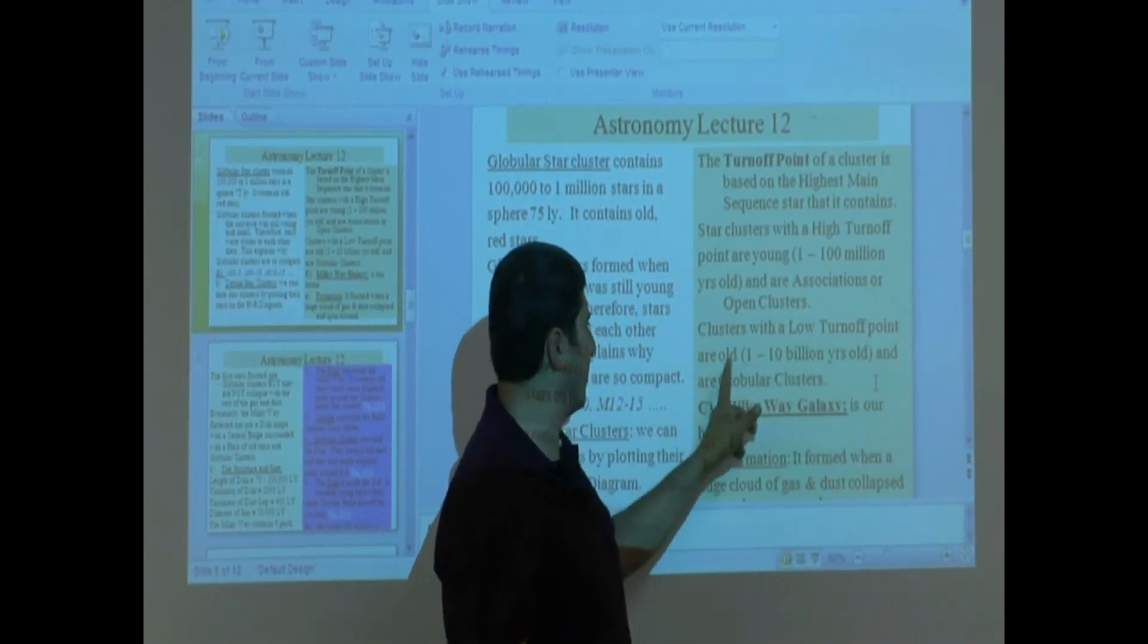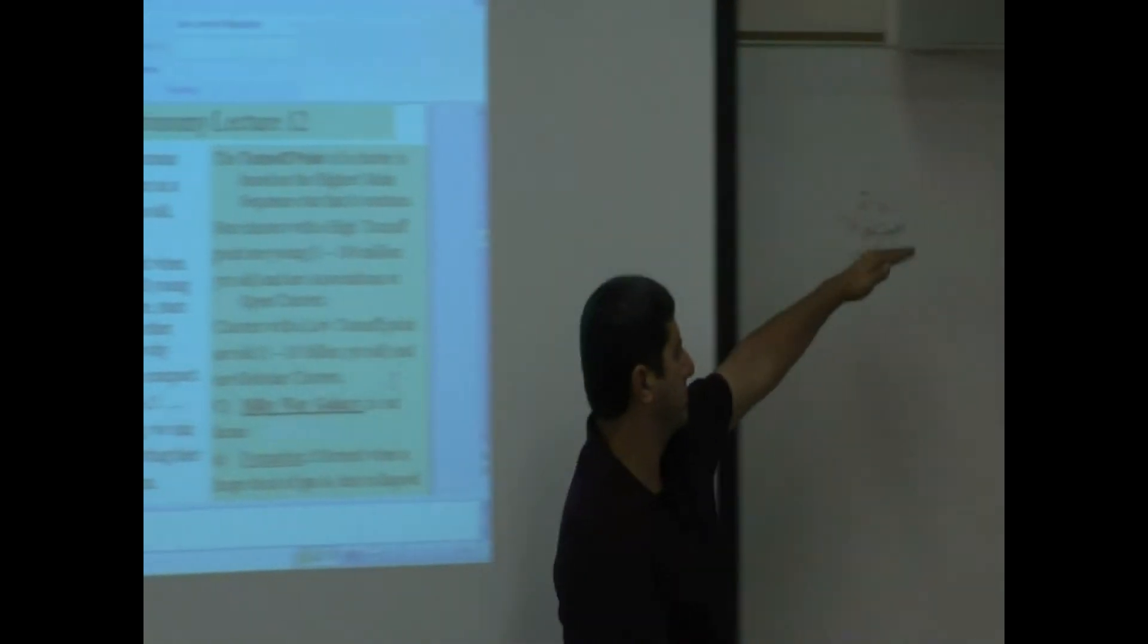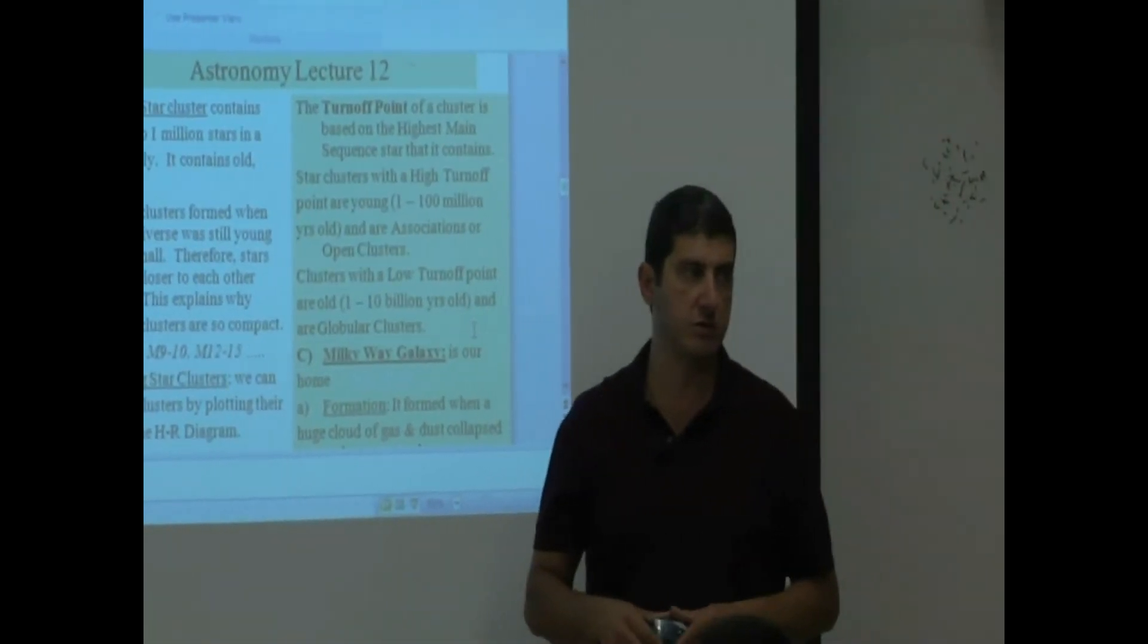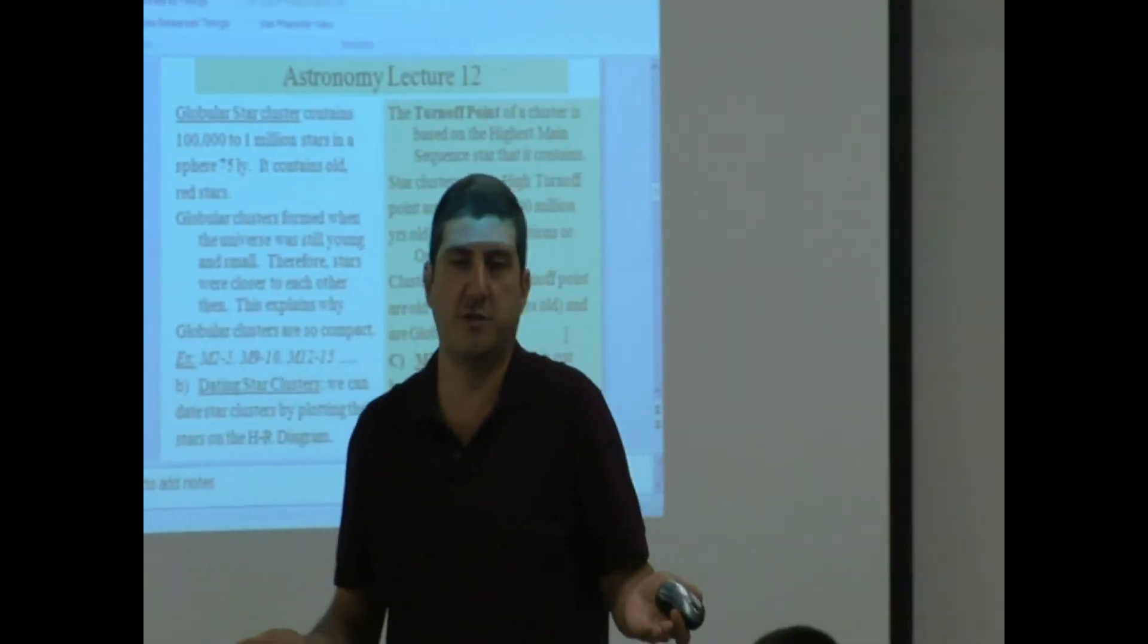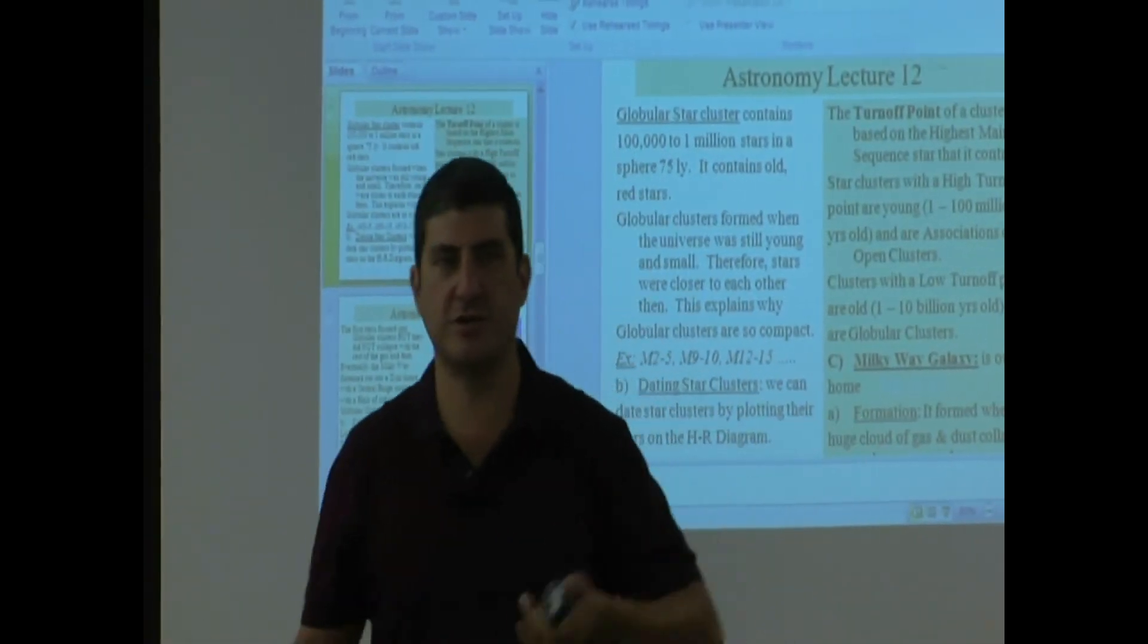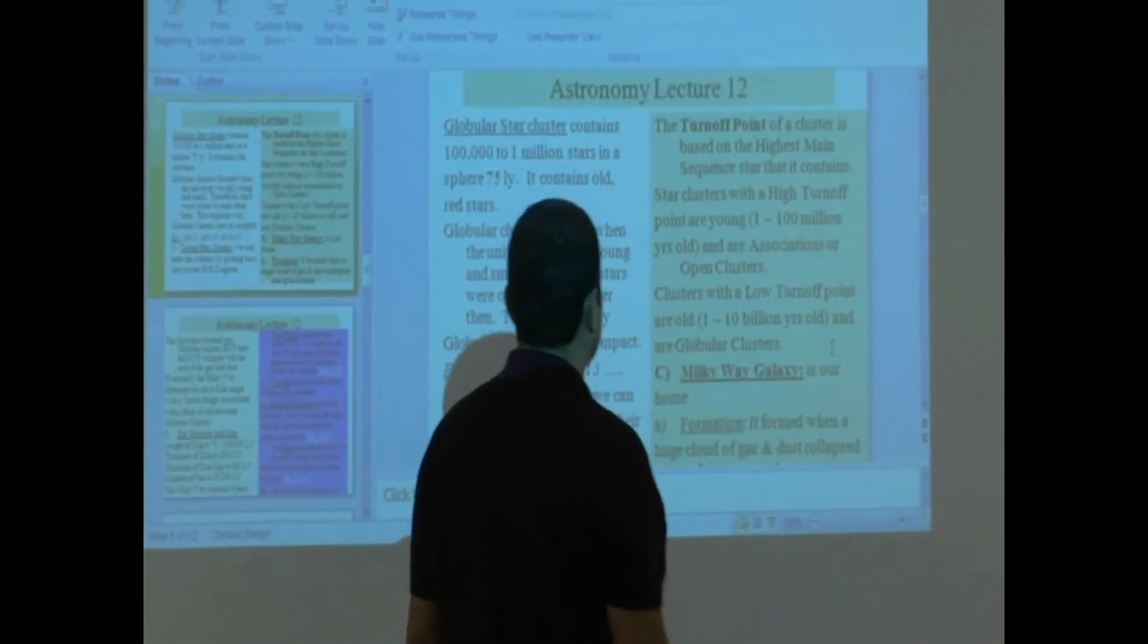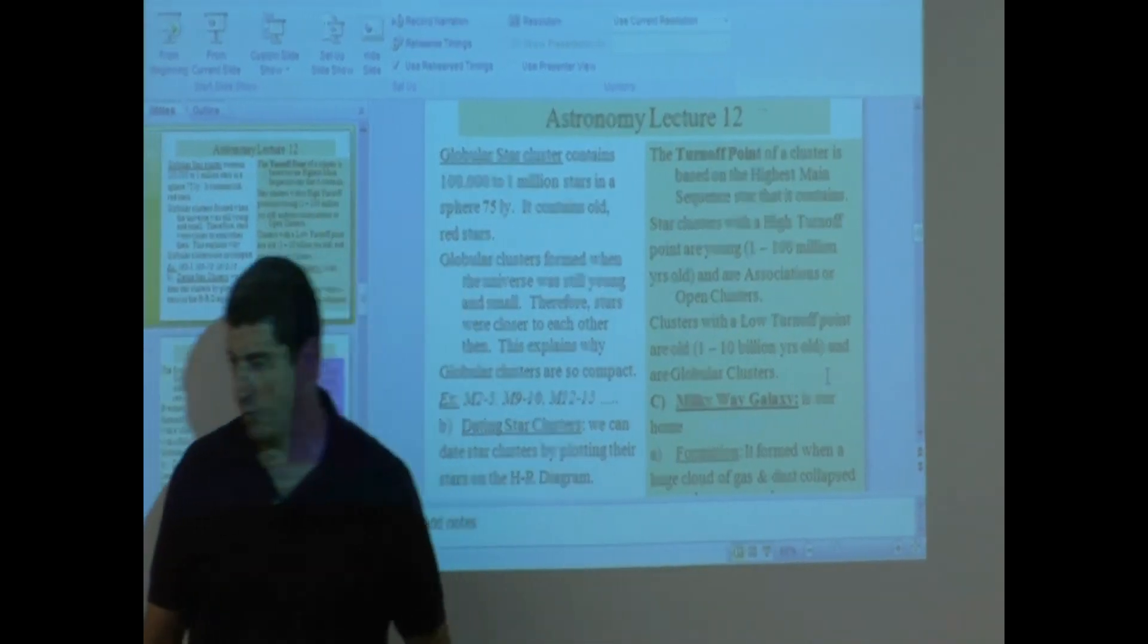Clusters with a low turnoff point are old. The lower they are, down here. And therefore they're likely to be 1 to 10 billion years old. They can't be much older than 10 billion because the universe only started 13 billion years ago. About 10 billion years is probably the oldest you can have. So star clusters with a low turnoff point are old and are globular clusters. Now we go to the Milky Way.